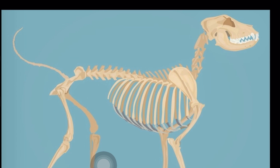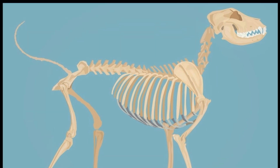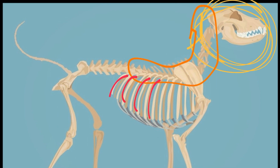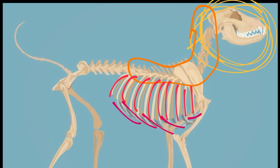The axial skeleton is comprised of the skull, which is made up of several paired and unpaired bones that protect the brain and support the structures of the face, and the vertebra, which houses the spinal cord. The vertebra together with the ribs and the sternum forms the thoracic cavity, which houses vital organs such as the heart and the lungs.